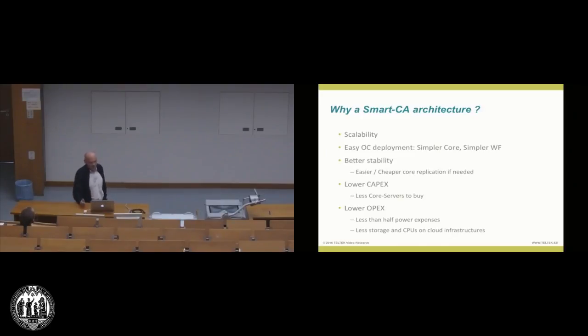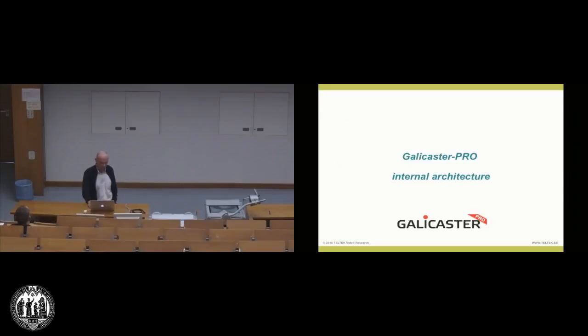So, why this architecture? Well, it's scalability, but it's also to simplify the OpenCast deployment. Also, you will lower the cost of buying the whole thing, but also the cost of operation. For instance, just thinking in power expenses, if you run the same processing power in your data center, you will have to cool, to spend almost the same power on cooling, and running that processing power at the classroom, you will not need to cool it at all. But to understand better the Galicaster Pro capture agent idea, or the smart capture agent idea, we can take a look at its internal architecture.